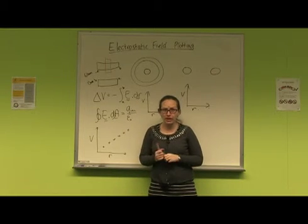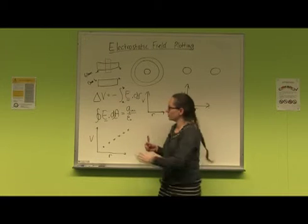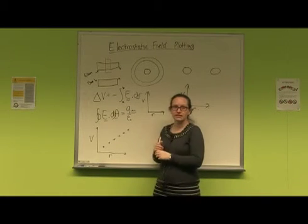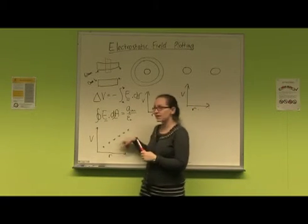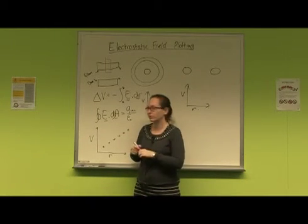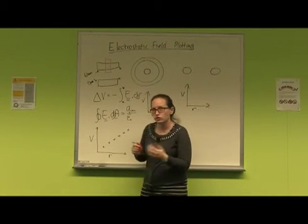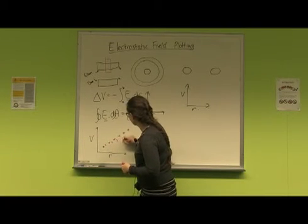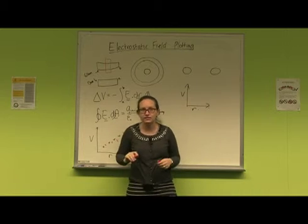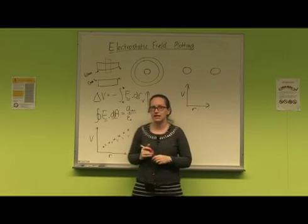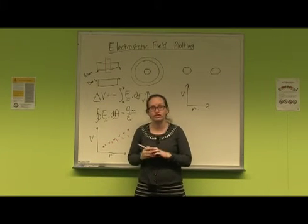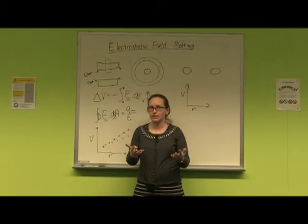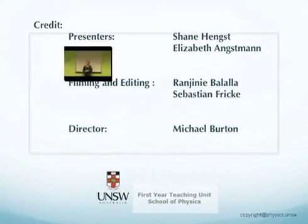So now that you've made all your measurements, you can go back to the theoretical graphs that you've plotted. And on the same set of axes you're going to be plotting your experimental results. So possibly your experimental results will look something like this. So plot them on the same set of axes. And then you're going to need to compare these experimental results with the theoretical ones.